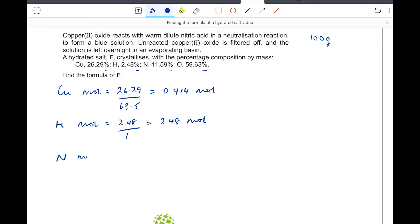Nitrogen: number of moles, we have got 11.59 percent or grams. The mass of nitrogen is 14. If I plug that into my calculator, that comes out at 0.828 moles. And finally, oxygen: number of moles equals we've got here 59.63 divided by 16, and that comes out at 3.727 moles.